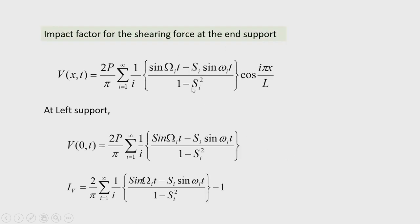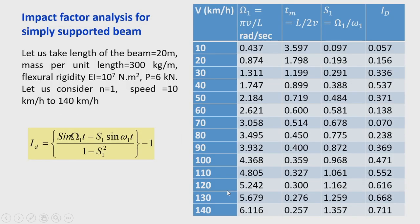The bending moment impact factor uses the maximum static bending moment PL/4, giving IM = (8/π²)·Σ(1/i²)·[sin(Ωᵢt) − Sᵢsin(ωᵢt)]/(1−Sᵢ²)·sin(iπ/2) − 1. The shear force impact factor at the left support (x = 0) is IV = (2/π)·Σ(1/i)·[sin(Ωᵢt) − Sᵢsin(ωᵢt)]/(1−Sᵢ²) − 1.